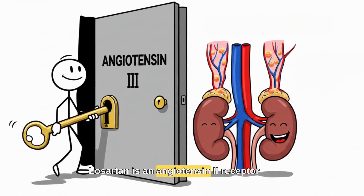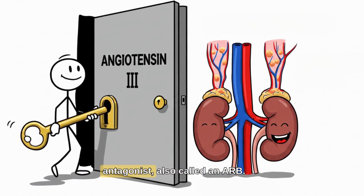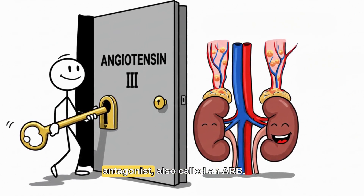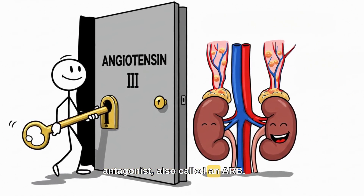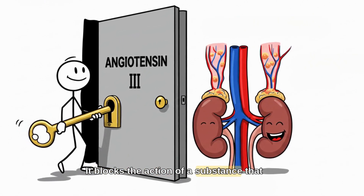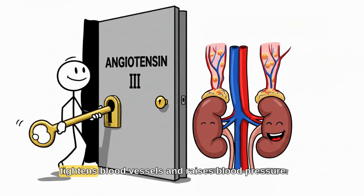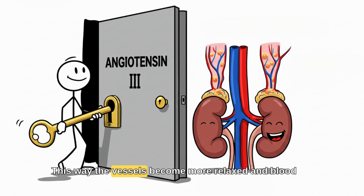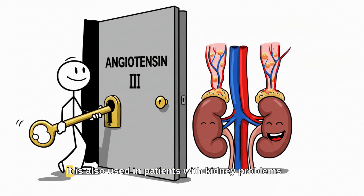Losartan is an angiotensin 2 receptor antagonist, also called an ARB. It blocks the action of a substance that tightens blood vessels and raises blood pressure. This way the vessels become more relaxed and blood pressure drops. It is also used in patients with kidney problems caused by diabetes.